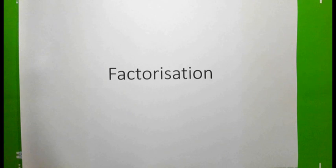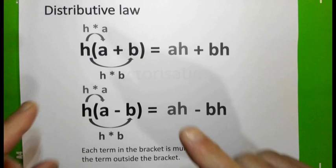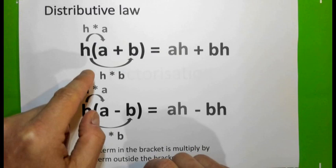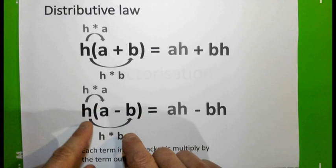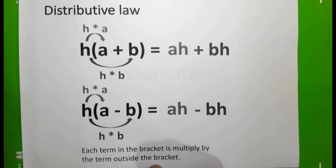We are going to look at factorization. Before we launch into factorization, we need to recall the distributive law. From memory, you should know that when we multiply h into (a + b) we have ah + bh. Similarly, if you have h into (a - b) you get ah - bh. This means each term in the bracket is multiplied by the term outside the bracket, so this expands into this.